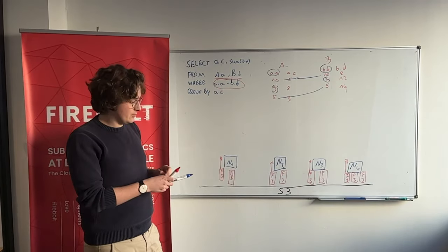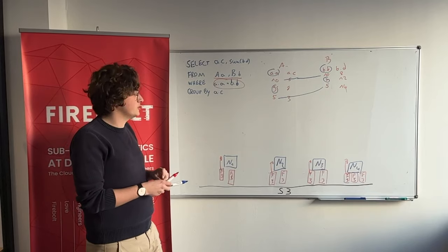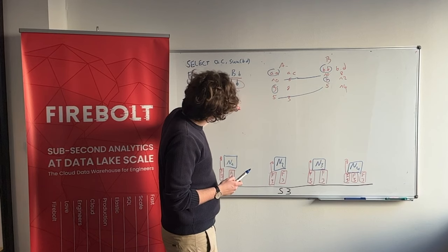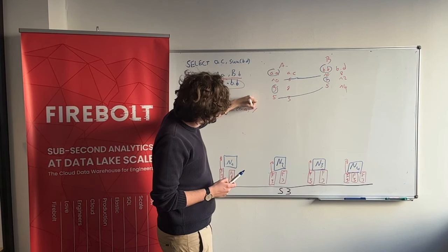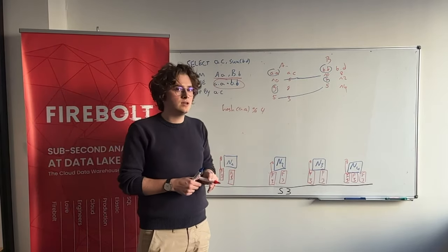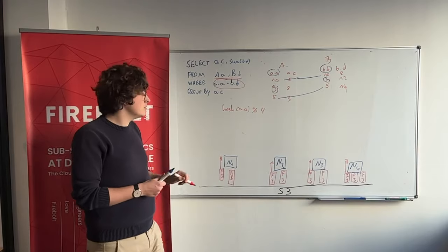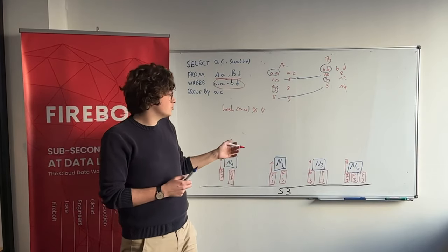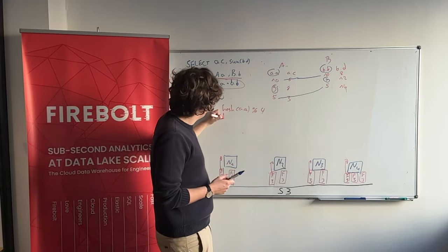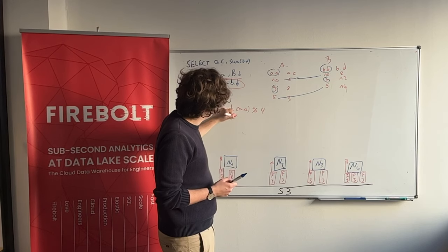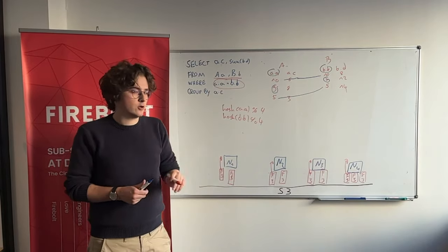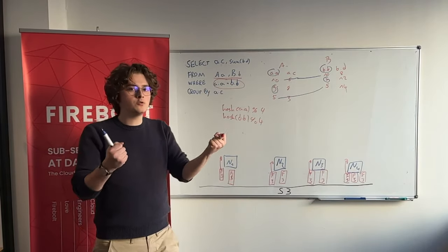The cool trick now is in order to be able to scale out across the cluster for this join, we can basically take the hash of A.A and take it modulo four. So this will give me numbers between 0 and 3. Each time I get a 0, I will send the row to node 1. Each time I get a 2, I will send the row to node 3, and so on. And if I do the same thing with the column B.B, then after partitioning according to this function, the rows which are supposed to be joined actually are collocated on the same node.